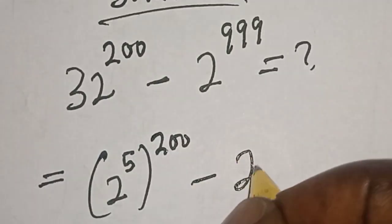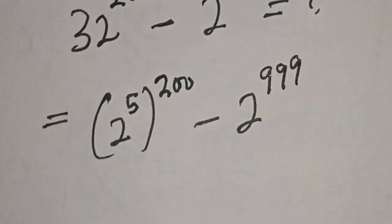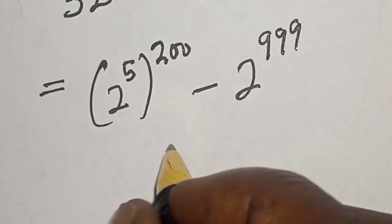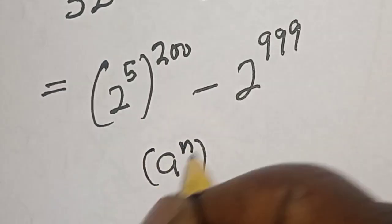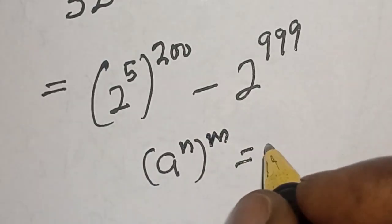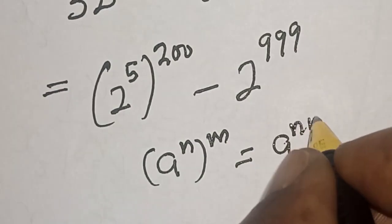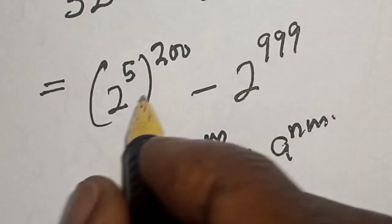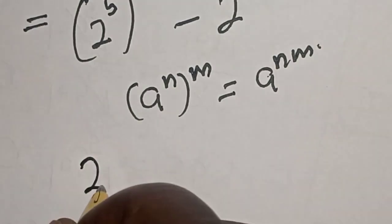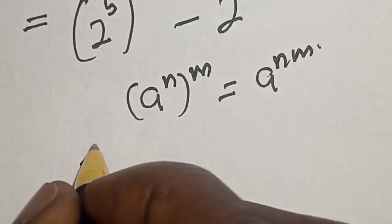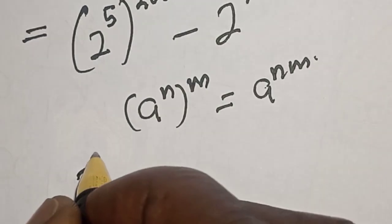Remember this rule: a raised to power n, raised to power m, is equal to a raised to power n times m. Then this becomes 2 raised to power 5 times 200 — that is 2 raised to power 1000.